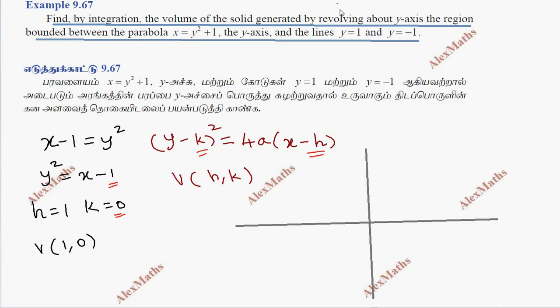This is a right side open parabola. This is 0, 0. This is 1, 0. But the question is, the line y is equal to 1 and y is equal to minus 1.